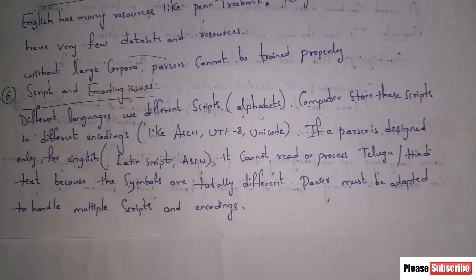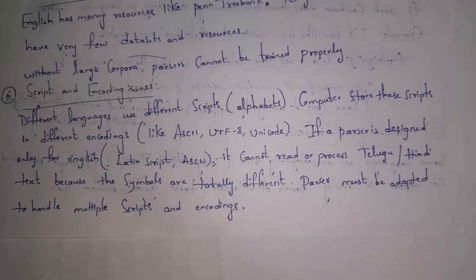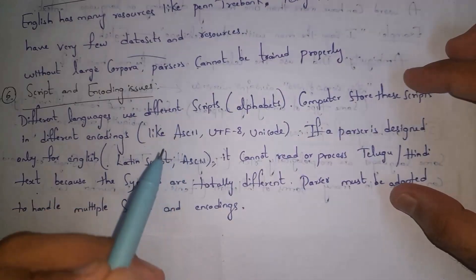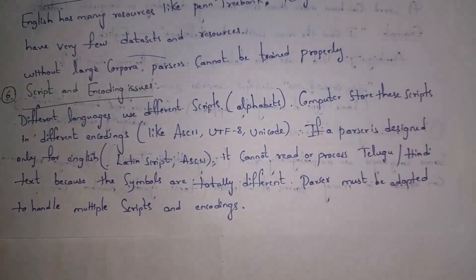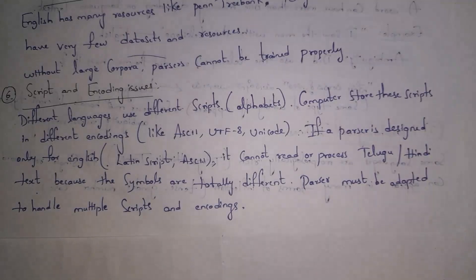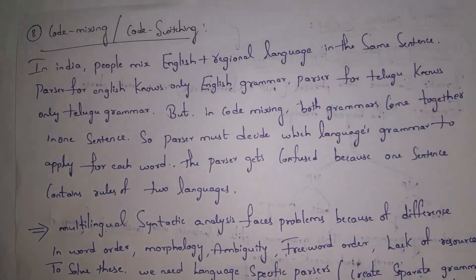The sixth issue is script and encoding differences. Different languages use different scripts containing different alphabets, and computers store scripts in different encoding formats like ASCII, Unicode, UTF, etc. If a particular parser is designed only for English, it can understand only English and cannot understand Telugu or other Indian languages, because the alphabets are different across languages.